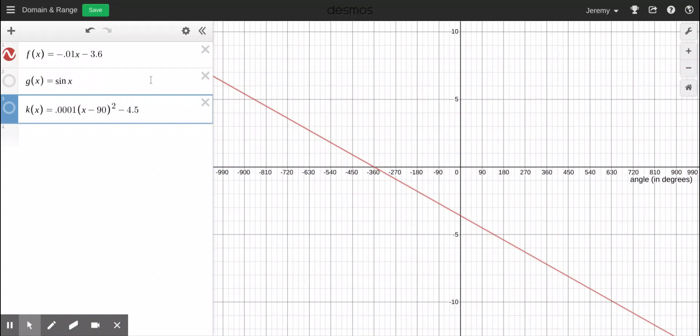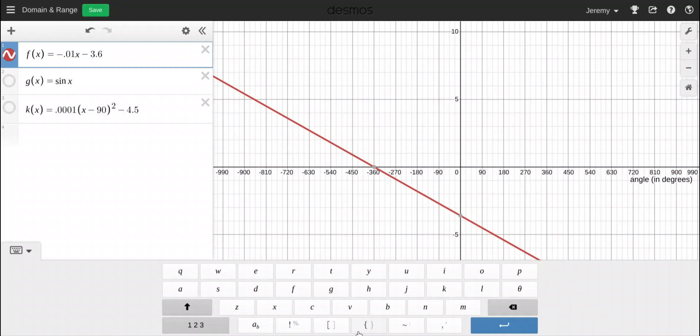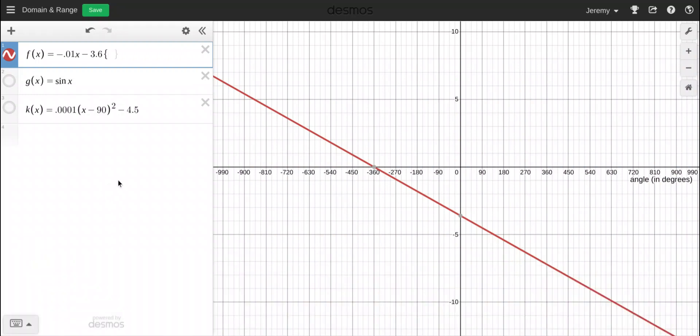So what I'm going to do is I'm going to restrict the domain. And the way I'm going to do that is by putting the braces in. So to get the braces, you can either go down here to the show keypad and click ABC. And it's these little squiggly braces right here. The other thing you can do is you can type them in between the enter and the backspace key on those keyboards.